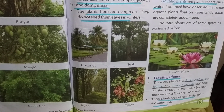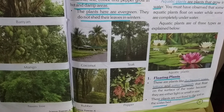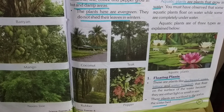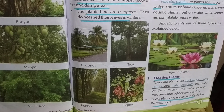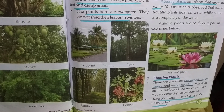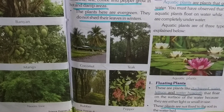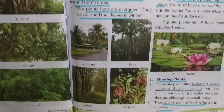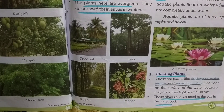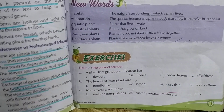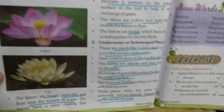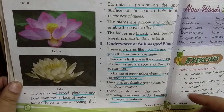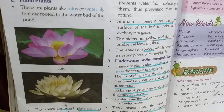Number 1: Floating plants. These are plants like duckweed, water lettuce, and water hyacinth that float on the surface of the water because they are either light or small in size. These plants are not fixed to the soil in the water bed. They have spongy bodies with lots of empty spaces filled with air.